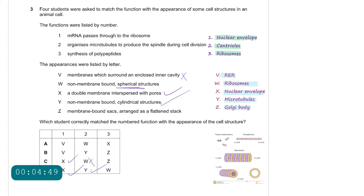Point 3: synthesis of polypeptides. We know this is the ribosomes. The suggestions are Z or W. Z — membrane-bound stacks arranged as flattened stacks — is definitely the Golgi body, so this is incorrect. Therefore the answer for question 3 is D.